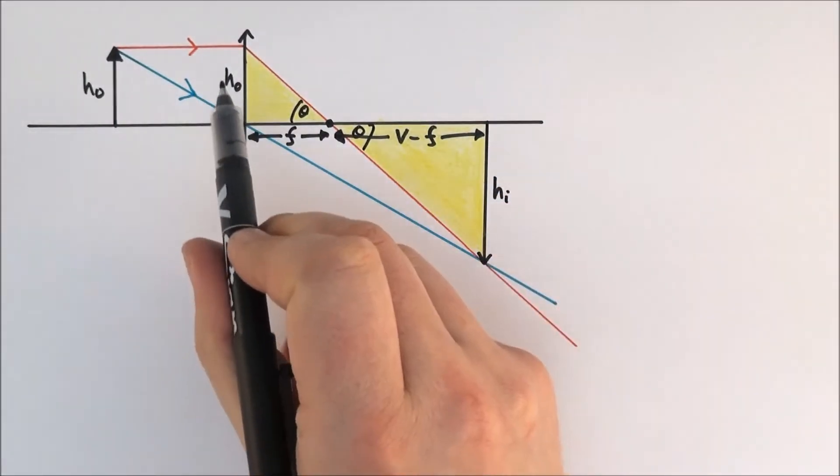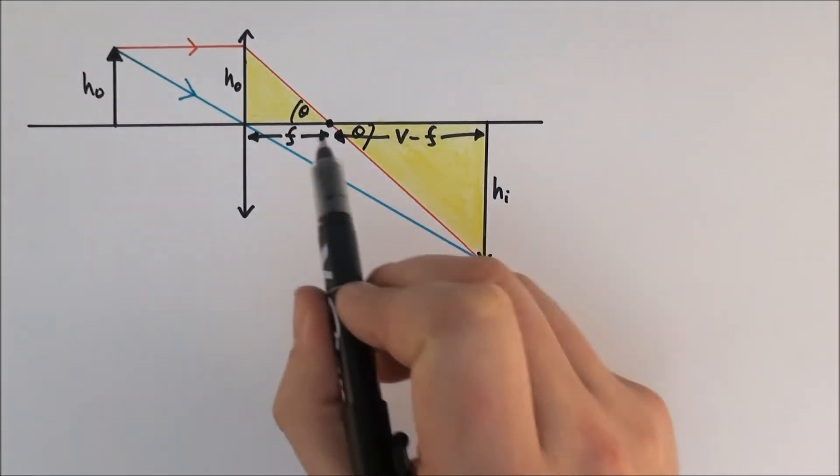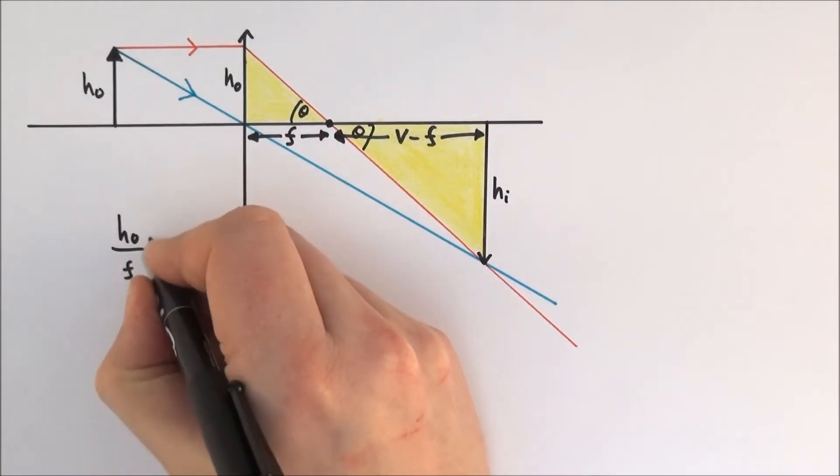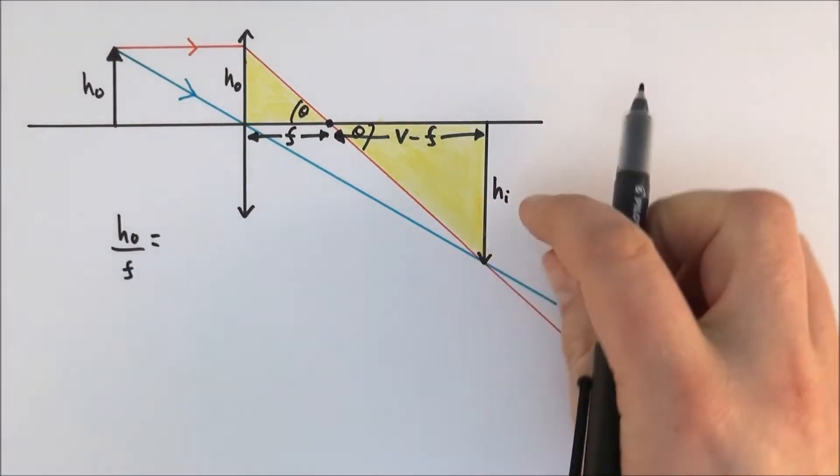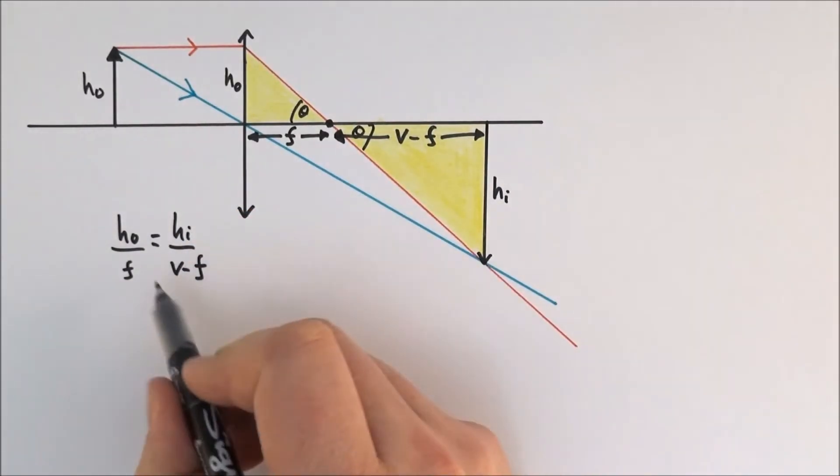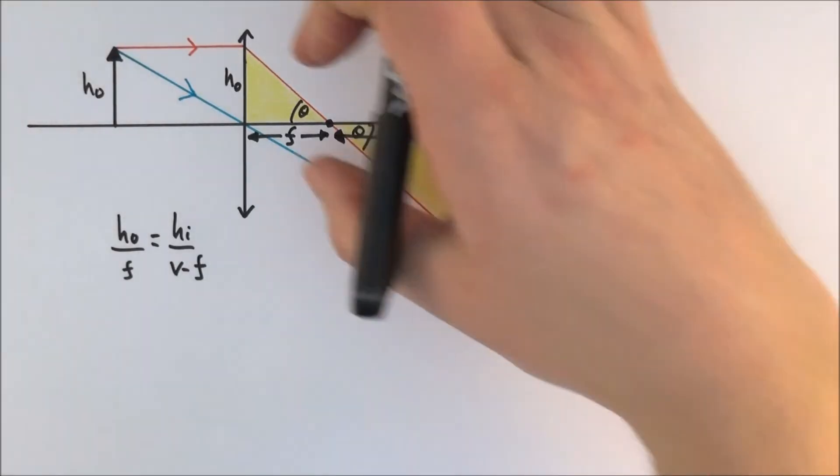Now if they're similar triangles that means the ratio of this side to this side is the same as the ratio of this side to this side. So what we can say for this one is that h naught over f is the same as the ratio of the image height to v minus f. And what I can then do is rearrange the ratio of this height to this height.